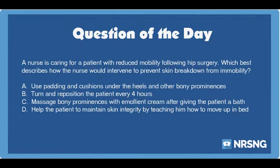Again, a nurse is caring for a patient with reduced mobility following hip surgery. Which best describes how the nurse would intervene to prevent skin breakdown from immobility? A. Use padding and cushions under the heels and other bony prominences. B. Turn and reposition the patient every four hours. C. Massage bony prominences with emollient cream after giving the patient a bath. D. Help the patient to maintain skin integrity by teaching him how to move up in bed.